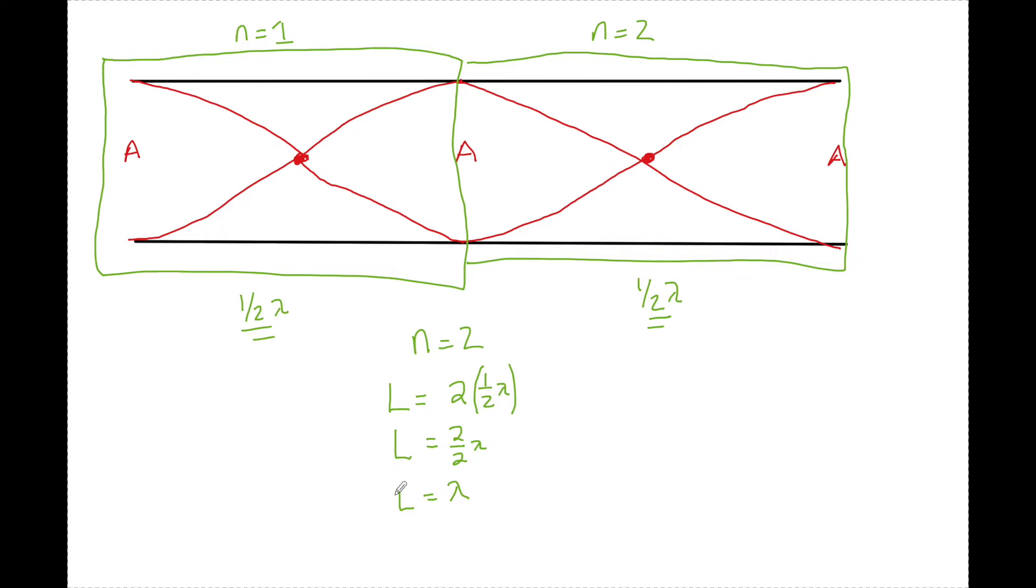So that becomes really easy to solve for lambda once again, which is just L. And then it becomes very easy to solve for frequency, which is just going to be V over L. Okay, so now let's look at the relationship and see if we can figure out what a formula might be for every single one. So in that N equals one, we saw that L equaled one half of a wavelength. Therefore, the wavelength equaled two L and the frequency equaled V over two L.